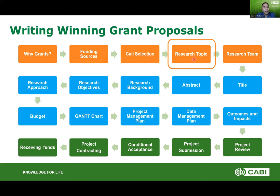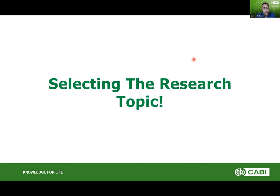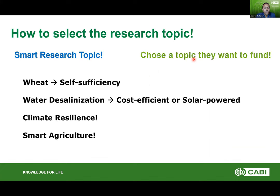Now let's select the research topic. When selecting the research topic, you need to select a 'smart' research topic — meaning a topic they want to fund themselves. Something key to the country, like self-sufficiency of wheat in Egypt — we are the largest importer of wheat worldwide, making it a national priority. Water desalination, climate resilience, smart agriculture — anything related to your topic that is at the center of the funding agency's focus. Select one of those topics so you won't have a hard time convincing the funding agency to fund you; in fact, they will want to fund your topic.